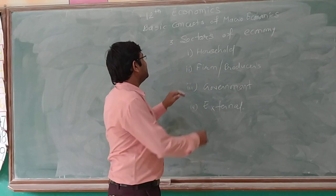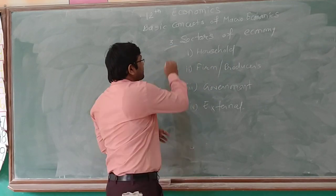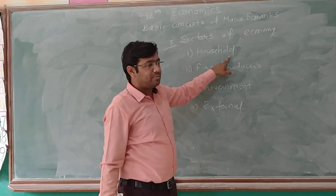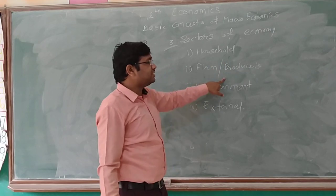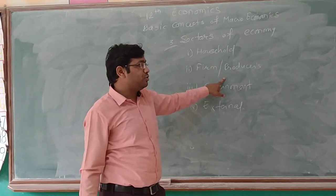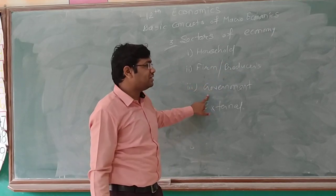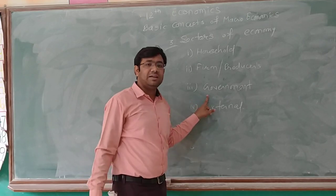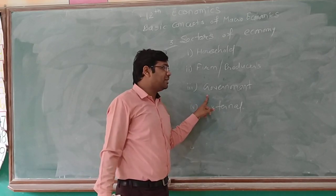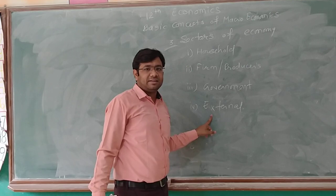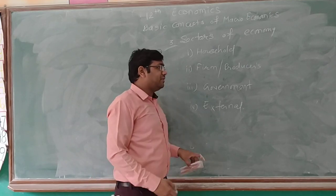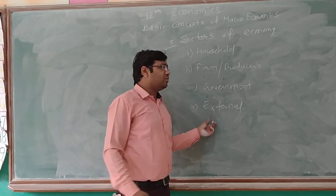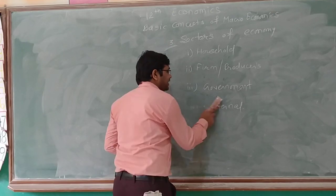Let us conclude the sectors of economy. There are four sectors. First is the household sector — the sector which consumes commodities. Second is the firm or producer sector, which produces something. Third is the government sector, which is responsible for collecting taxes and providing benefits. Fourth is the external sector, with which we do exports and imports.